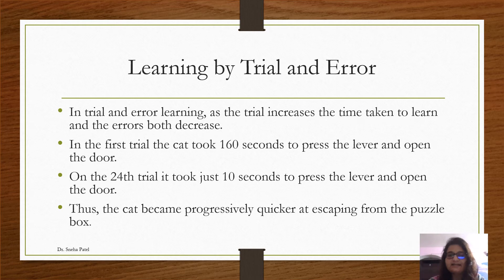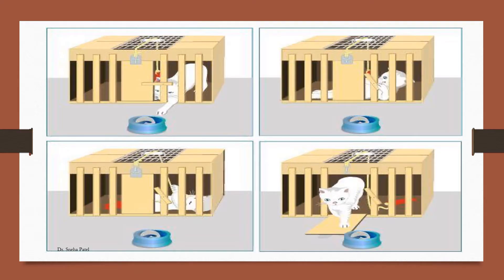The cat became progressively quicker at escaping from the puzzle box — learning took place very nicely and accurately. When Thorndike put the hungry cat inside the box, he also put food outside it. The cat wanted to grab at it but couldn't — it had to come out. It made many attempts, many incorrect responses, many errors, but it kept on trying. Finally, it learned that if it has to come out of the box, it has to press the lever to get the food. In this way, learning took place by trial and error. More the trials, lesser the errors, and learning will be accurate.